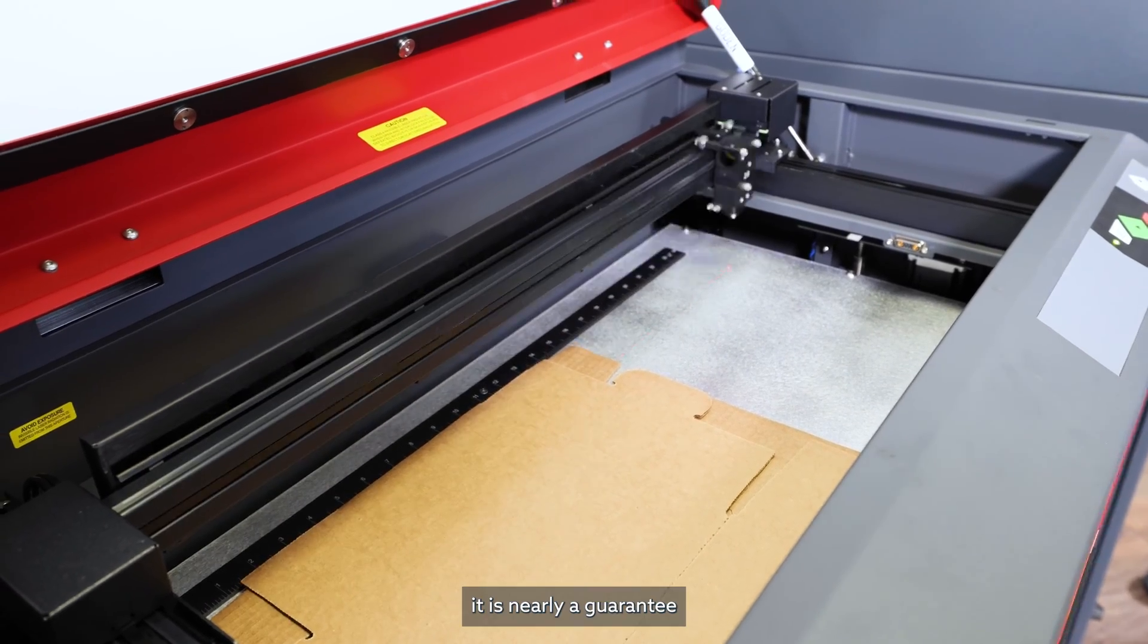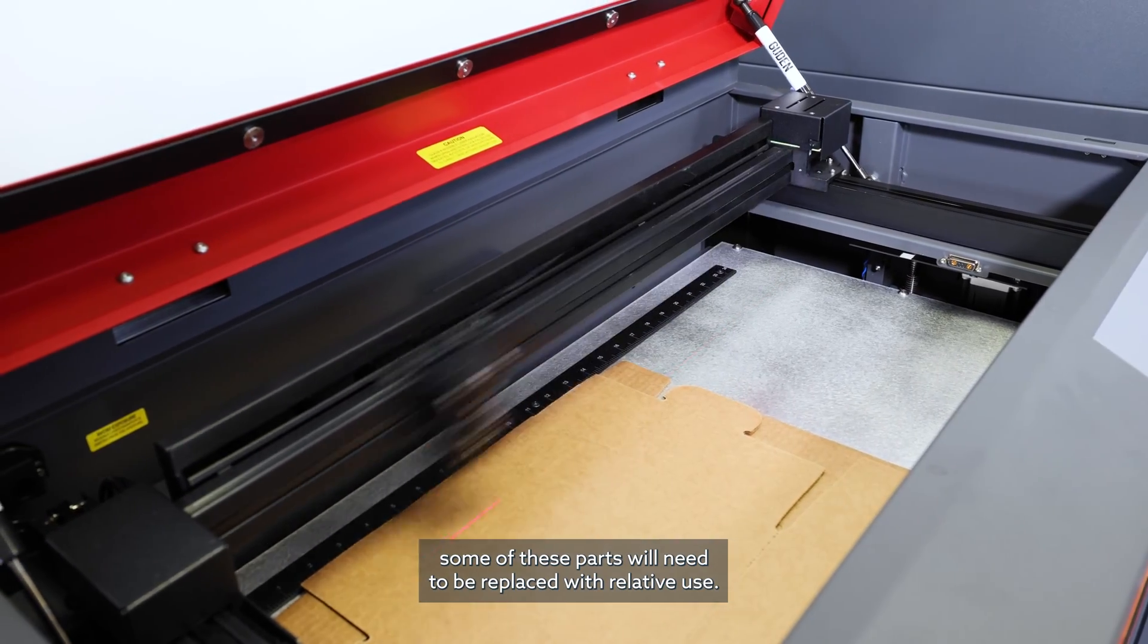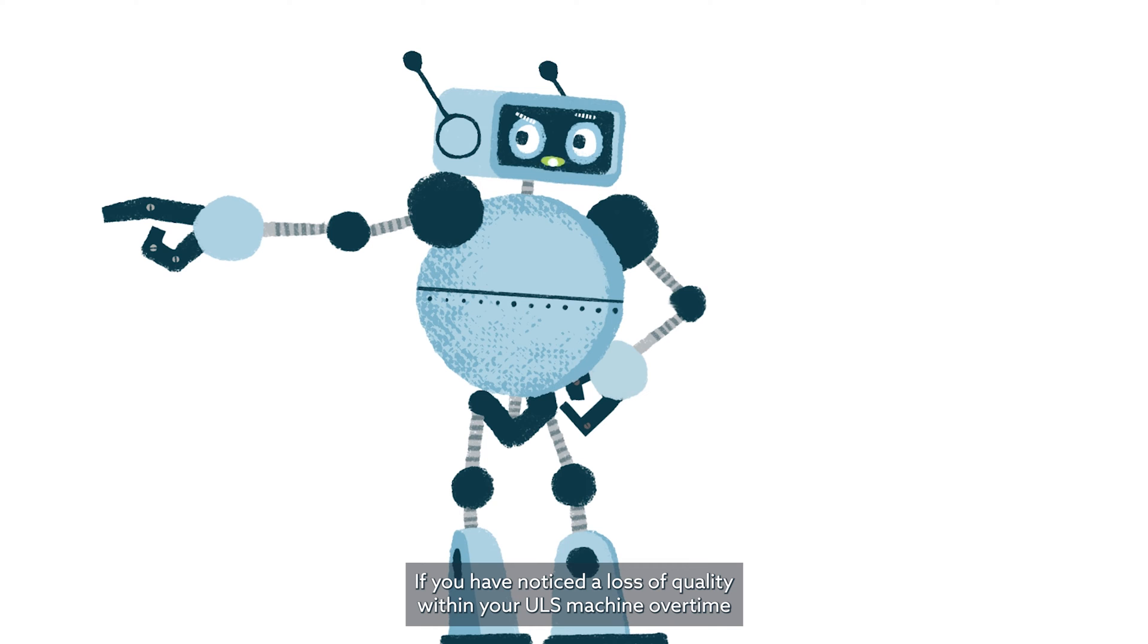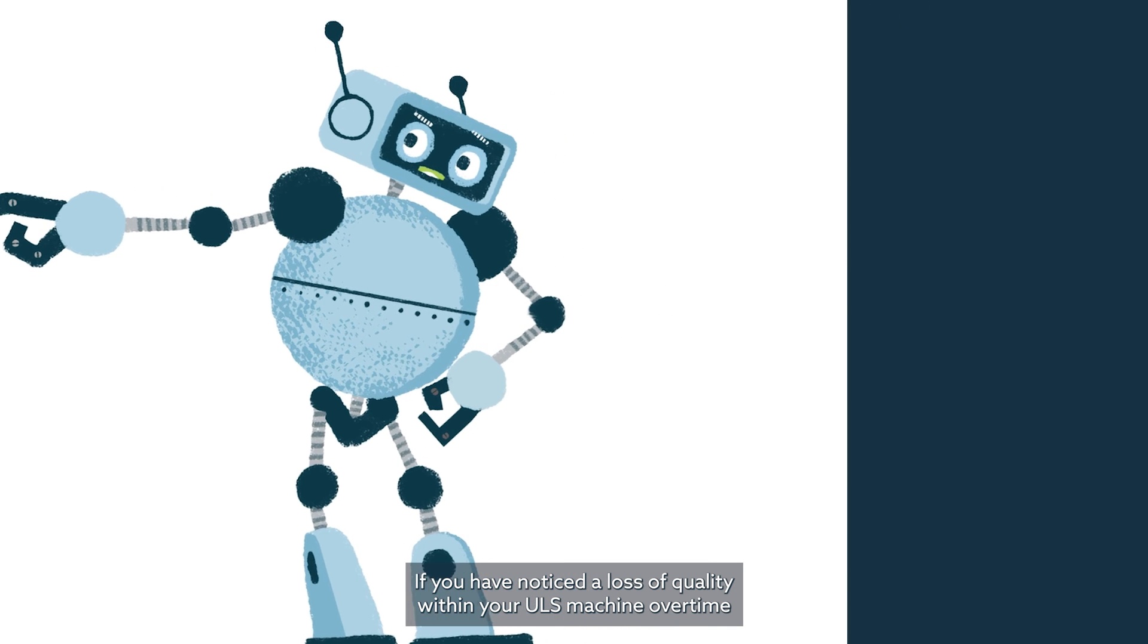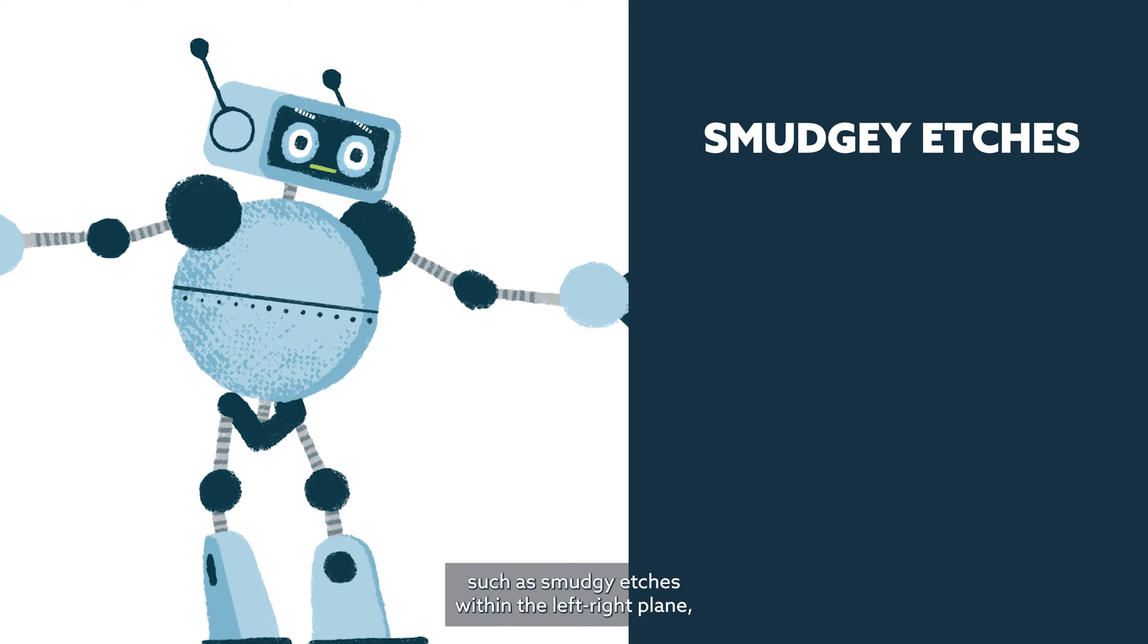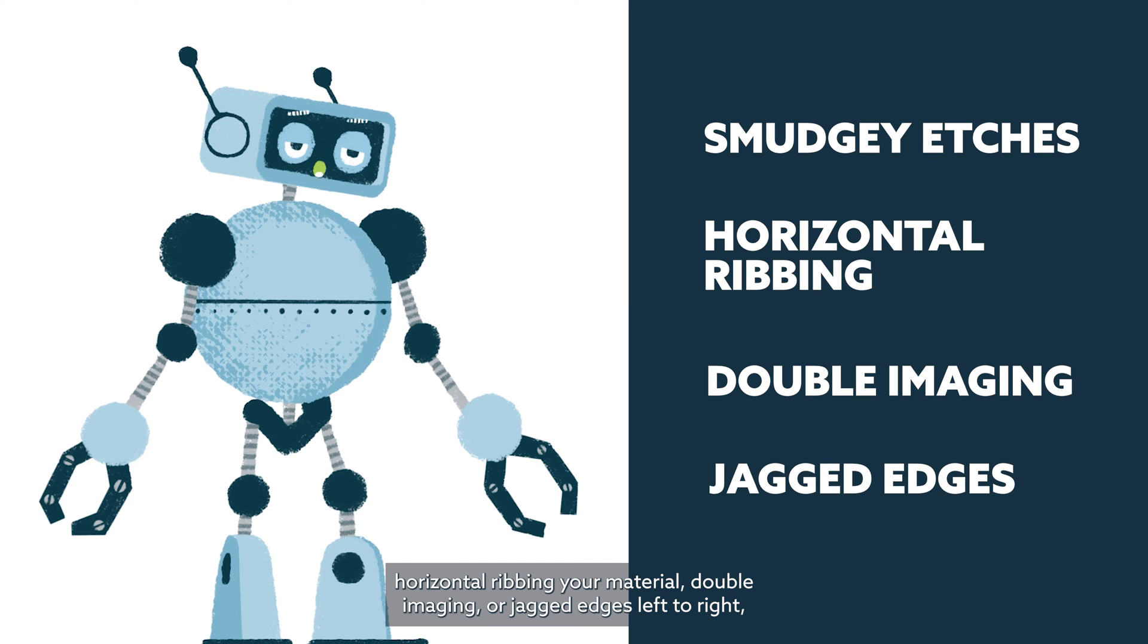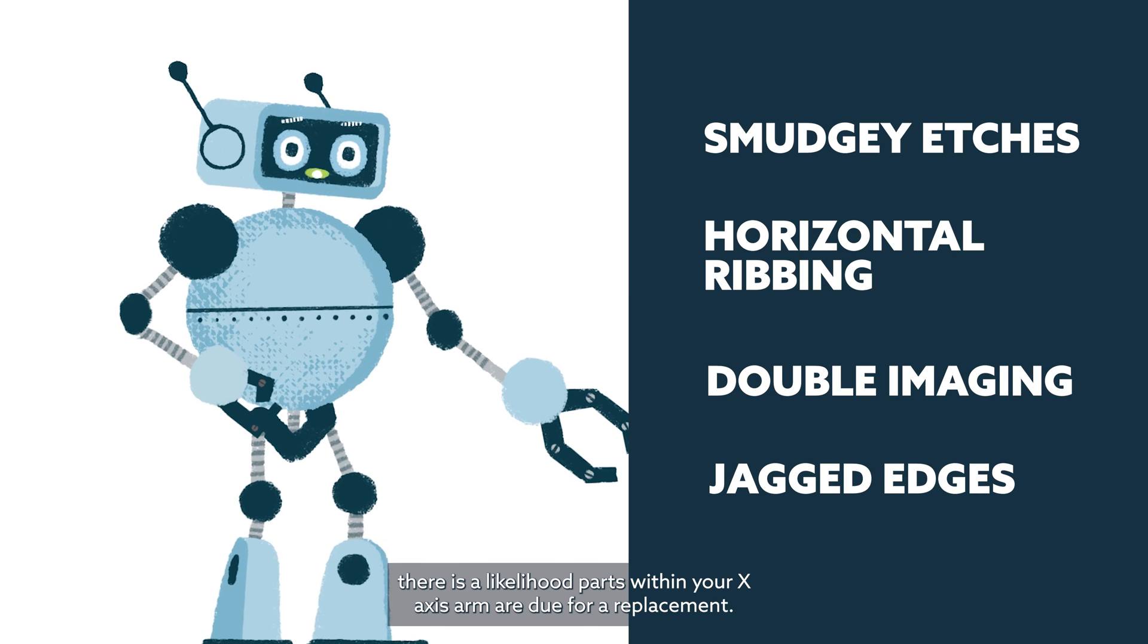It is nearly a guarantee some of these parts will need to be replaced with relative use. If you are noticing a loss of quality within your ULS machine over time, such as smudgy edges in the left-to-right plane, horizontal ribbing in your material, double imaging, or jagged edges left to right, there is a likelihood parts within your x-axis arm are due for replacement.